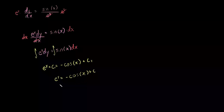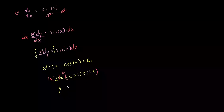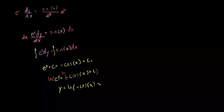From there, what we want to do is get y alone so we can solve for our independent variable. We can take the natural log of both sides. What we're left with is y is equal to the natural log of negative cosine of x plus c.